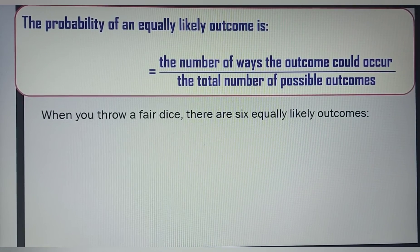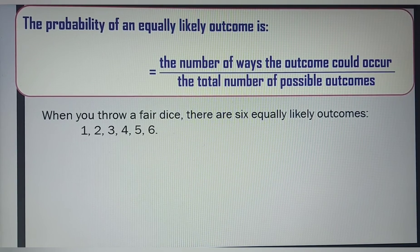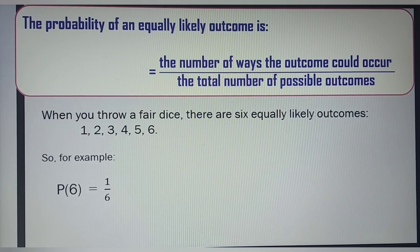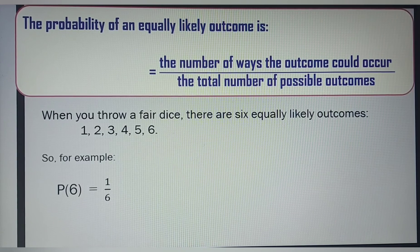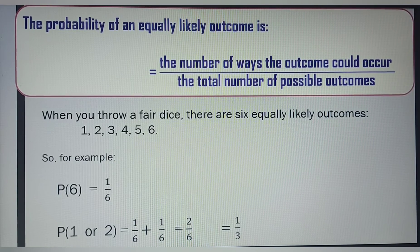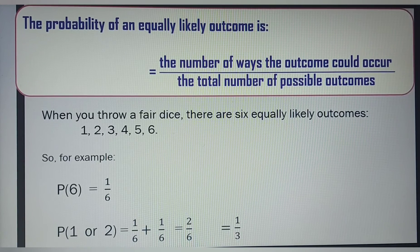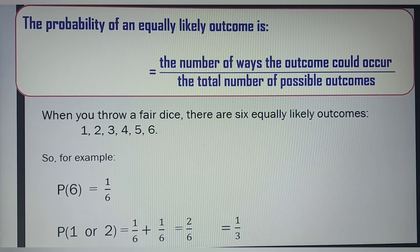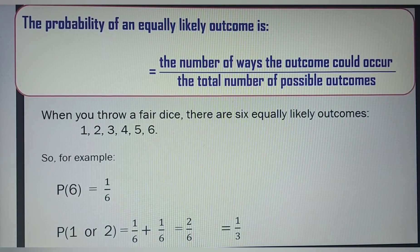When you throw a fair dice, there are 6 equally likely outcomes since a die is numbered from 1 to 6. For example, the probability of getting a 6 equals 1 over 6, because there is a single 6 on a dice. Also, the probability of getting a 1 or a 2 when you throw a fair dice is 1 over 6 plus 1 over 6, because the probability of getting a 1 is 1 over 6 and the probability of getting a 2 is also 1 over 6. So when you add up, you get 2 over 6, and when you simplify, you get 1 over 3.